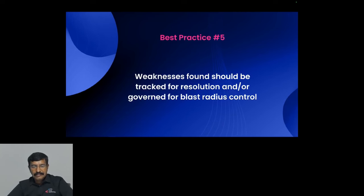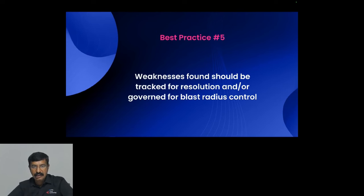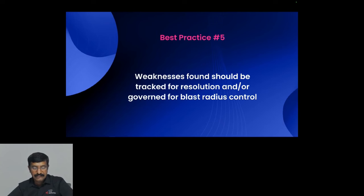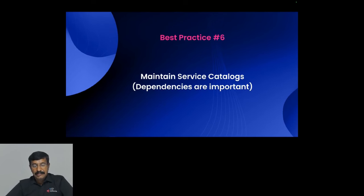Fifth best practice: a lot of weaknesses are found but not organized for tracking resolutions. Have good practices around tracking issues — it could be configuration issues. Sometimes you find an issue and don't need to run that chaos experiment again because it's already breaking. Track it through a ticket, avoid running it again until fixed, and use that time to find other weaknesses. Govern for blast radius control — make sure the same chaos experiment is not run until the fix is given, so resilience coverage improves.